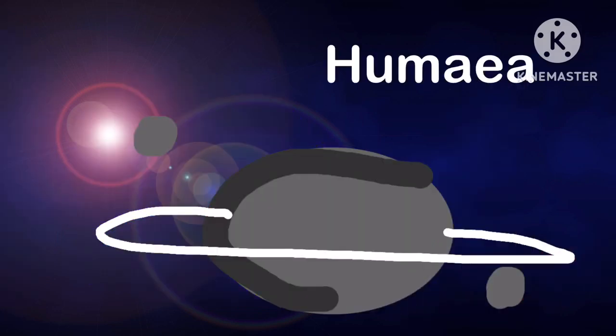The next one is Haumea. I'm Haumea. I've got two moons. My shape is unusual because I spin so fast. I'm oval in shape. I have rings.